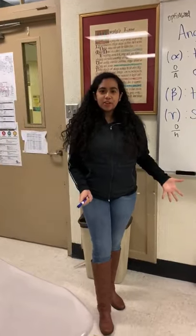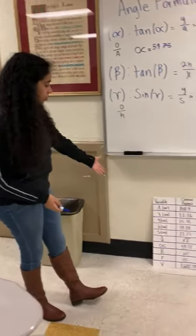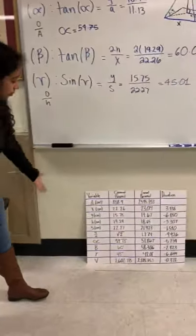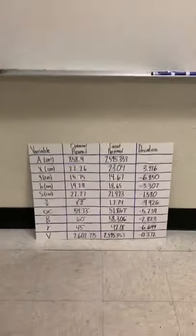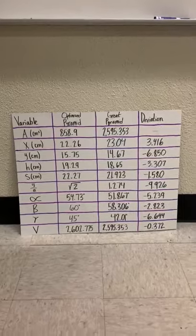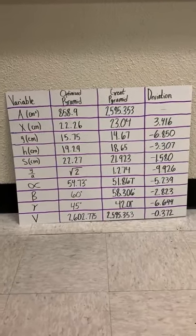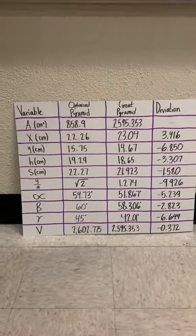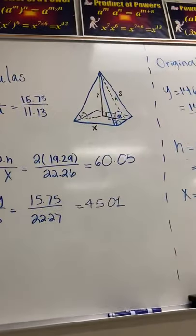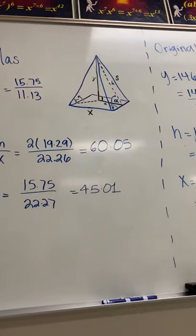As stated in our previous video, the variables and values now all make sense: A = 858.9, x = 22.26, y = 15.75, h = 19.29, s = 22.27. Also, y is the inside height of the triangular face and the apothem — which is like the radius of the square base.